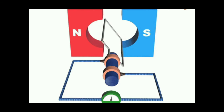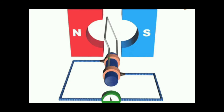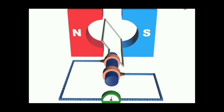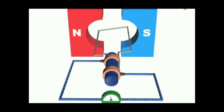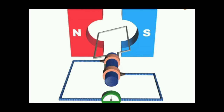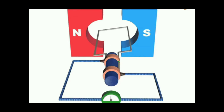As seen in the animation, there are two split rings connected with brushes made of carbon, and those brushes are connected to a galvanometer. The coil moves with the help of the split rings. The function of the split rings is to enable the movement of the coil. The coil can be moved by hand or by other means.